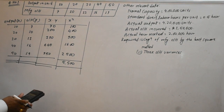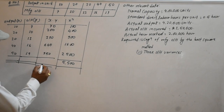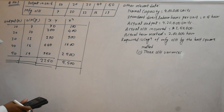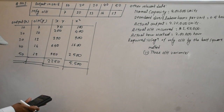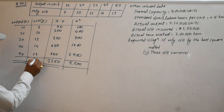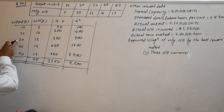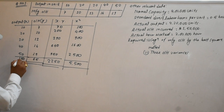Now the summation of x·y: 70 plus 200 plus 390 plus 640 plus 950 equals 2250. The summation of x is 150, summation of y is 65, and the summation of x squared is 5500.